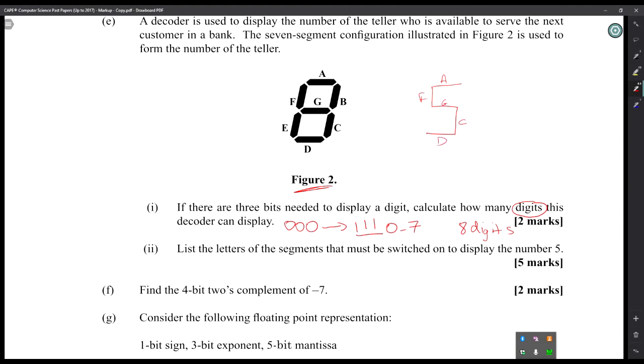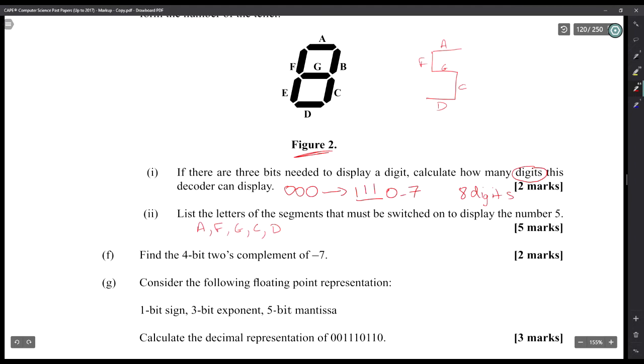Then, find the four-bit two's complement of negative seven. So we figure out what seven is first. Seven is 0111. You represent seven by itself normally, then you invert it, then you add one, and you'll get 1001. So the four-bit two's complement of negative seven is 1001.